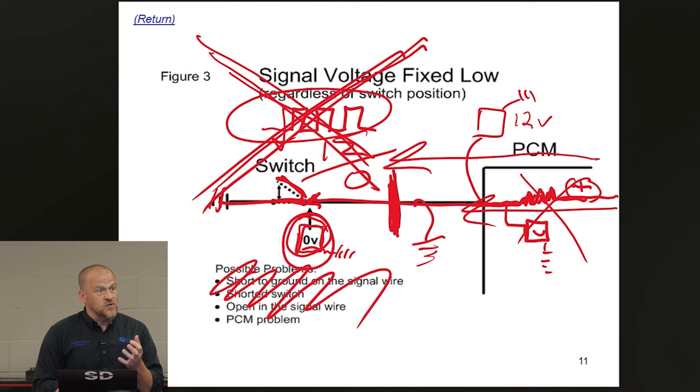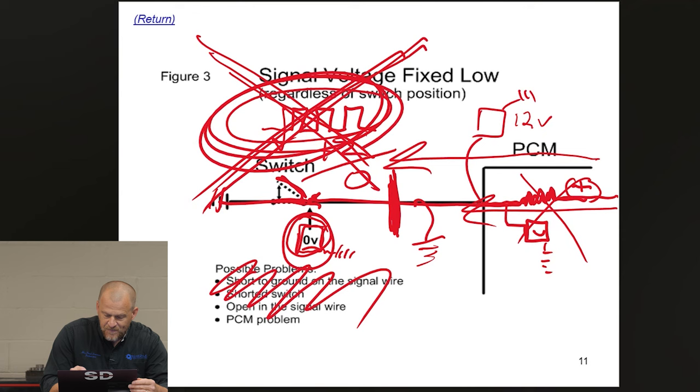You're trying to get to the engine computer to test the wire at the computer because you want to make sure that the signal's good at the computer. Do you understand? You don't have to do any of that. If it's a pull-down design and the signal is good, measured at the sensor, do you understand? You don't have to do that.